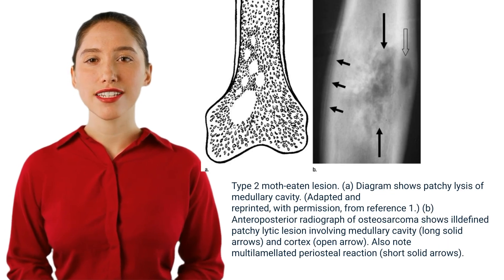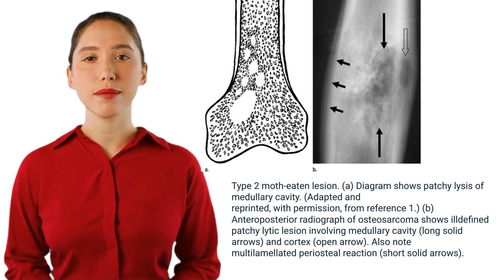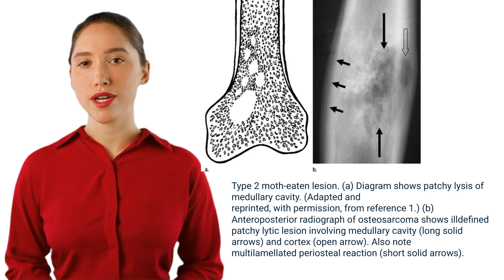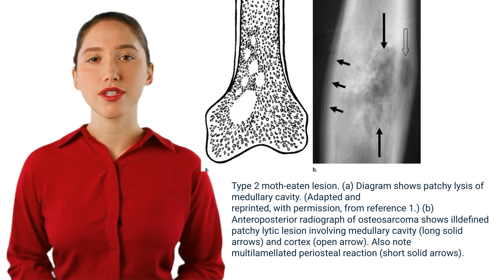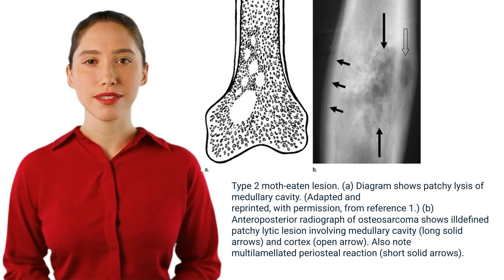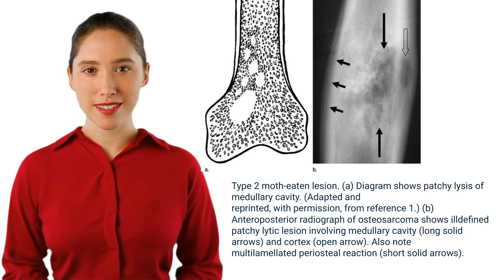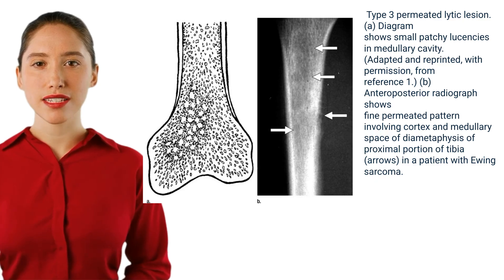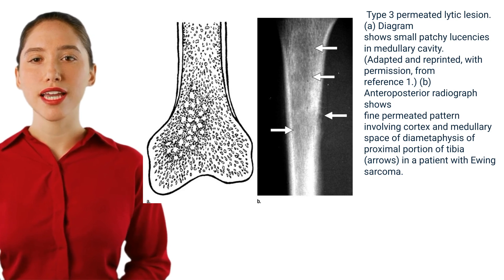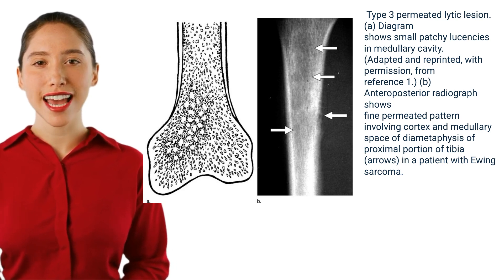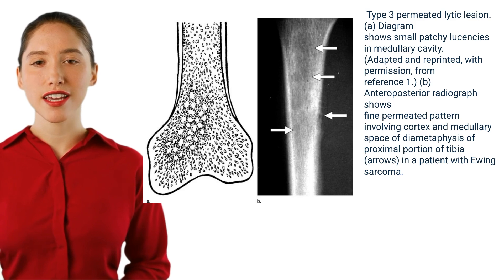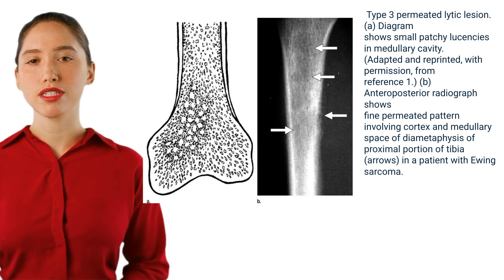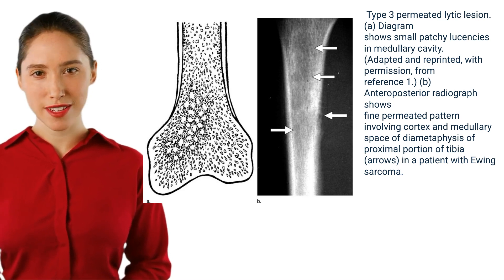Type 2 moth-eaten lesion: diagram shows patchy lysis of the medullary cavity. Anteroposterior radiograph of osteosarcoma shows an ill-defined patchy lytic lesion involving the medullary cavity (long solid arrows) and cortex (open arrow), with a multilaminar periosteal reaction (short solid arrows). Type 3 permeated lytic lesion: diagram shows small patchy lucencies in the medullary cavity. Anteroposterior radiograph shows a fine permeated pattern involving the cortex and medullary space of the diametaphysis of the proximal tibia in a patient with Ewing sarcoma.